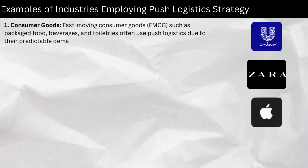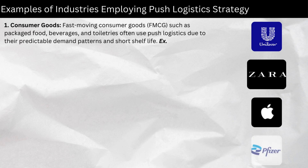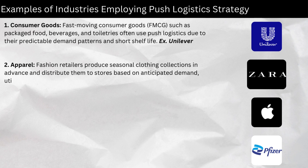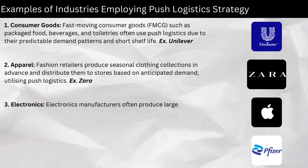One, consumer goods — fast-moving consumer goods (FMCG) such as packaged food, beverages, and toiletries often use push logistics due to their predictable demand patterns and short shelf life. Two, apparel — fashion retailers produce seasonal clothing collections in advance and distribute them to stores based on anticipated demand, utilizing push logistics.